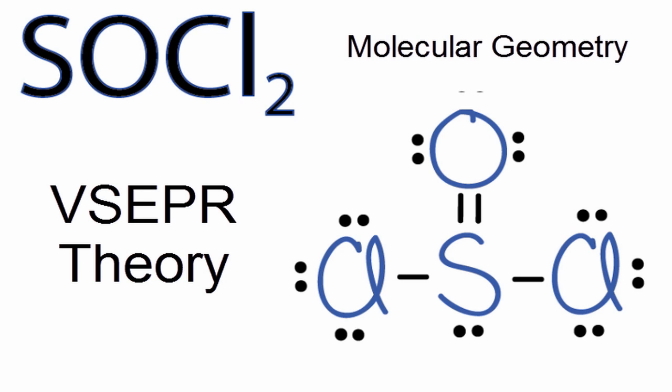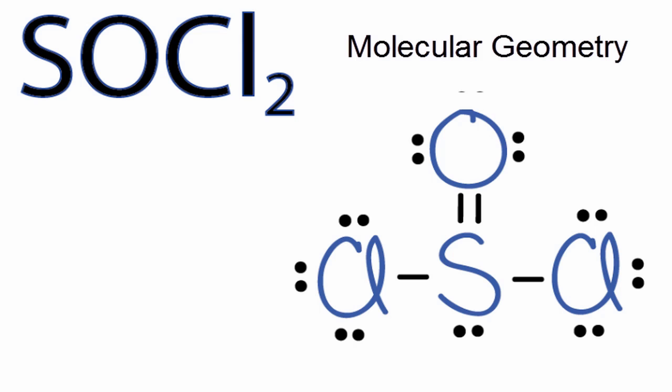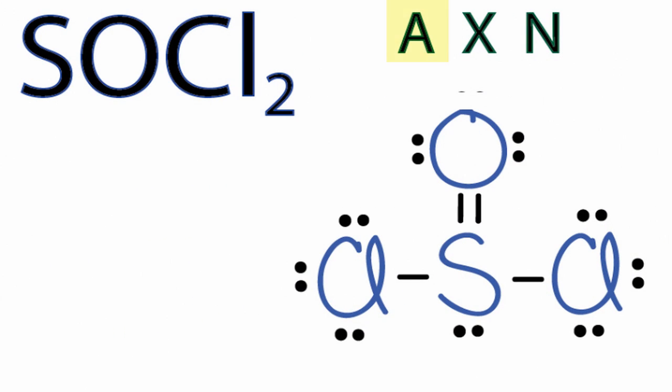We can also use the AXN notation to help us figure out that molecular shape for SOCl2. A, that's our central sulfur. X, that's the number of atoms bonded to that central sulfur atom. We have two chlorines and one oxygen, so we have three atoms bonded.